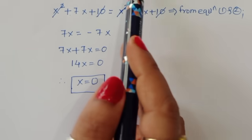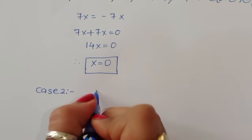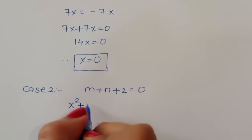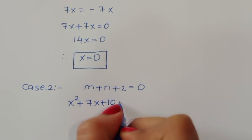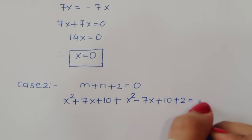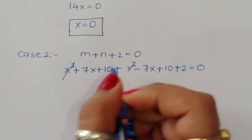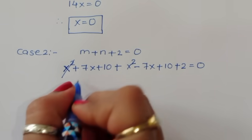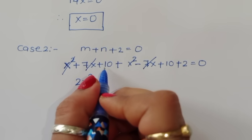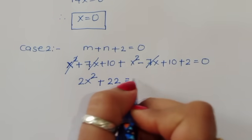Case 2: m+n+2 = 0. Substituting, (x²+7x+10) + (x²-7x+10) + 2 = 0. The x² terms add to 2x², the 7x and -7x cancel, and 10+10+2 = 22. So we get 2x²+22 = 0.